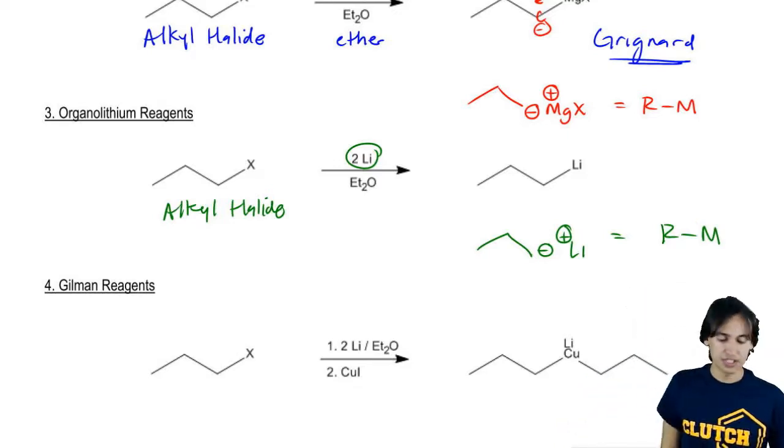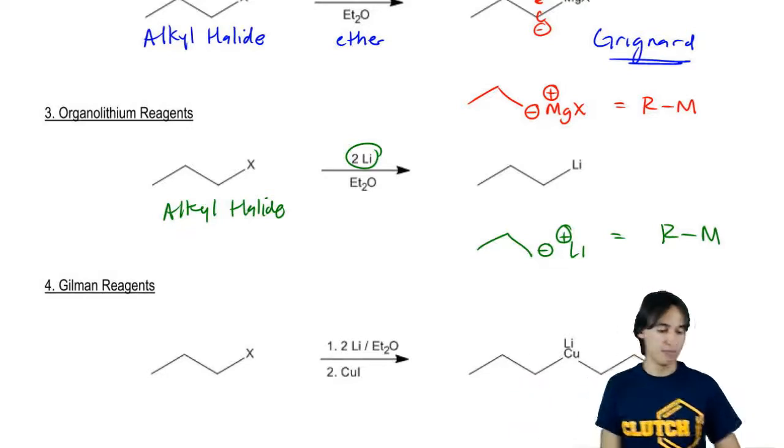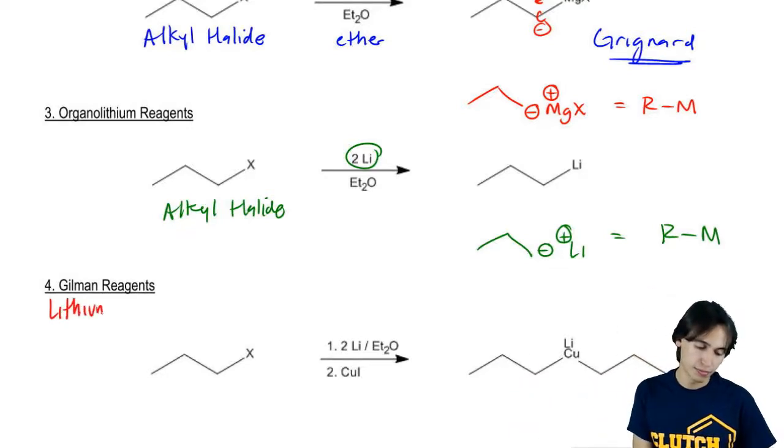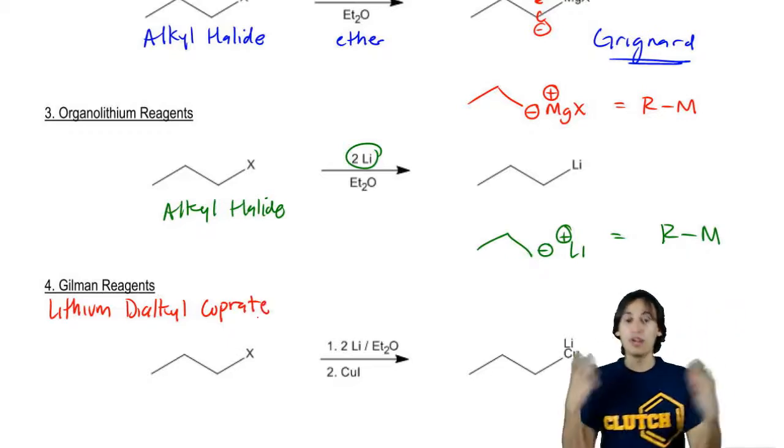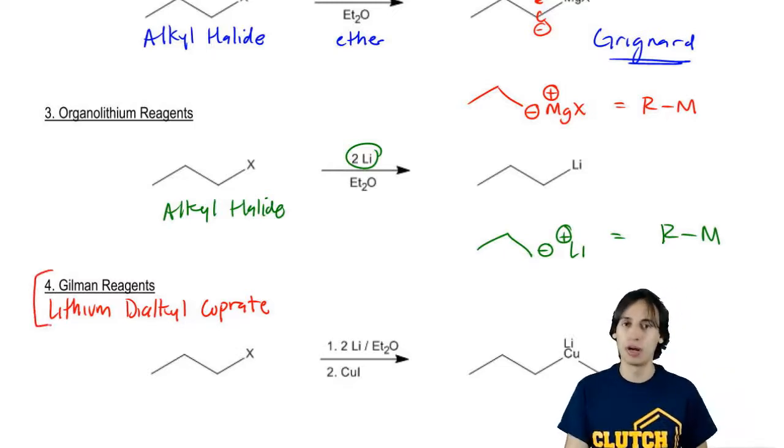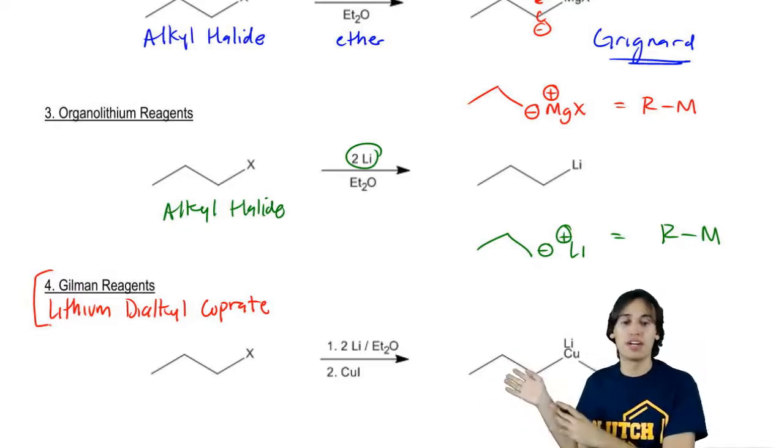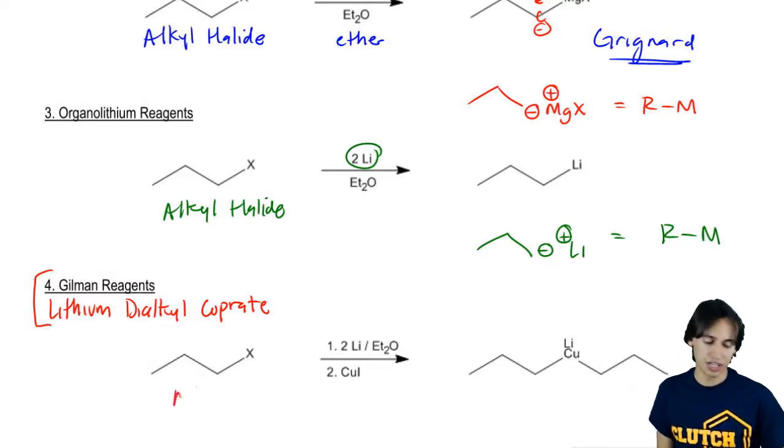So once again, this counts as an organometallic because I have an R group with a negative charge and one of the group one or two metals with a positive charge. And then finally we have Gilman reagents. Now if the word Gilman or phrase Gilman doesn't really ring a bell, maybe it's because in your textbook they may not call it a Gilman reagent. They may call it a lithium dialkyl cuprate. Really, I mean, they're the same exact thing. One is named after the scientist and one is just the general name.